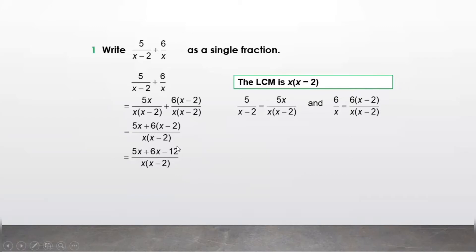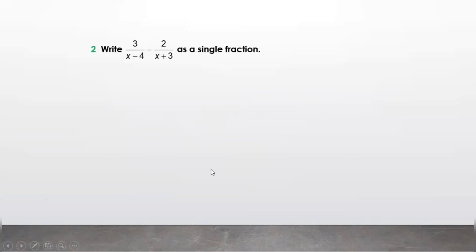Expanding: 6 times x is 6x, and 6 times minus 2 is minus 12. Now 5x and 6x are like terms — adding them we get 11x minus 12 upon x(x minus 2). This is how we express the algebraic fractions as a single fraction. Got it, children? Let's solve one more question.